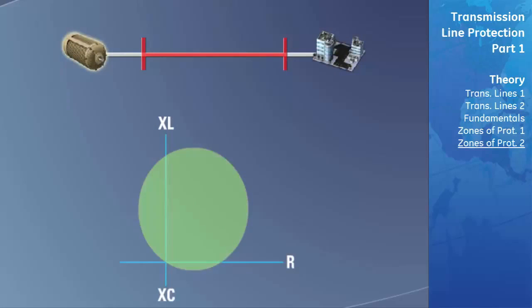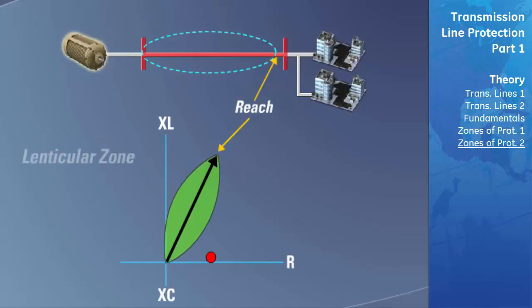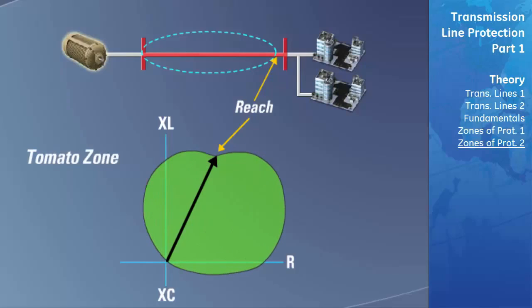Advanced microprocessor-based relays such as the UR D60 give the user the ability to further customize the shape of the Mho circle to meet their protection needs. For example, if the power system has instances where it can be heavily loaded and may cause the impedance to encroach into the Mho circle, the area of the circle may need to be changed. The Mho zone can be altered to form a lenticular shape, which only allows tripping when the impedance falls very close to the angle of the transmission line impedance. The D60 relay also gives the protection engineer the ability to configure the Mho characteristic into what is known as a tomato-shaped zone, which allows for faults with more of a resistive element to fall into its zone of protection.